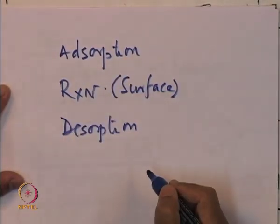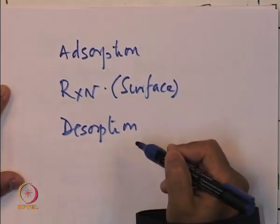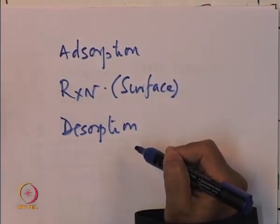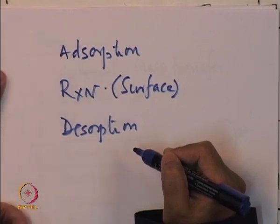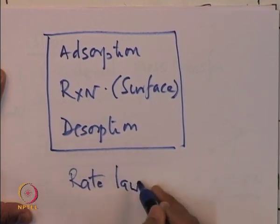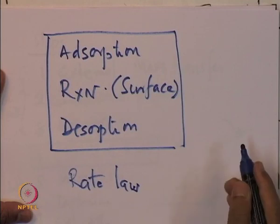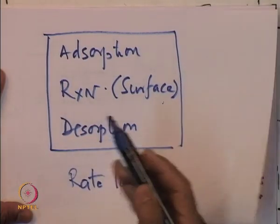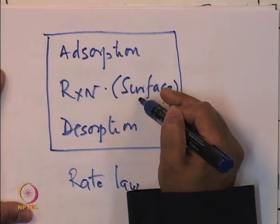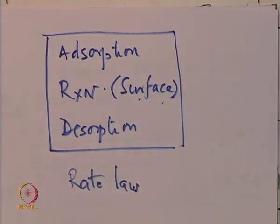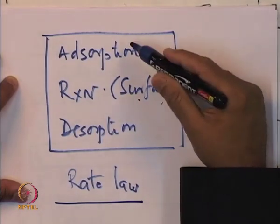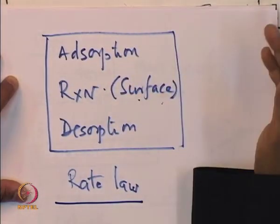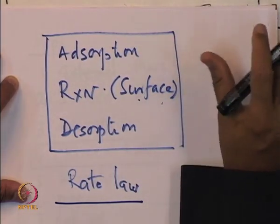Why do we study adsorption, surface reaction, and desorption together? Because these three steps relate the overall rate of reaction with the concentration in the liquid or gas adjacent to the solid surface — they are going to give us the rate law. In a normal case I have only the reaction taking place, whereas in heterogeneous catalysis, along with the reaction we have adsorption and desorption both taking place simultaneously. Diffusion and external mass transfer will be dealt with as a separate exercise.